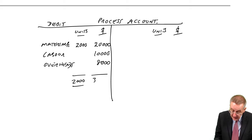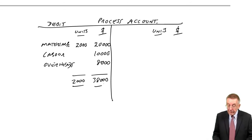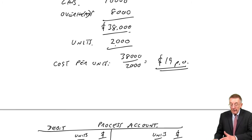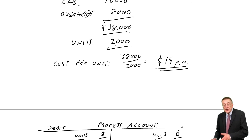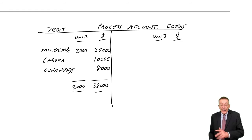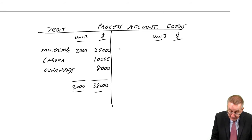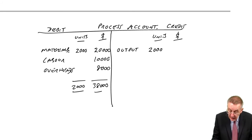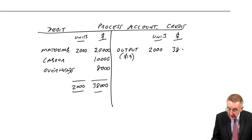We then do our costing and see that each unit leaving this process costs $19. On the other side — the credit side — we record the output: 2,000 units valued at $19 a unit from our costing, giving 38,000.